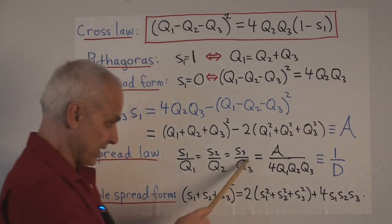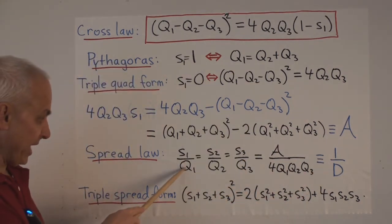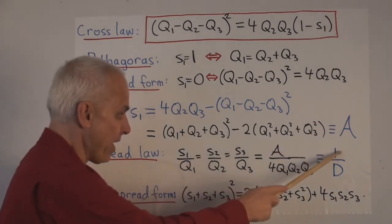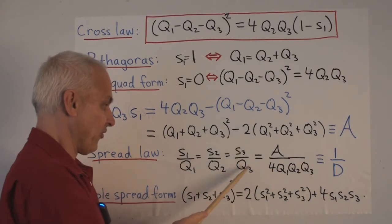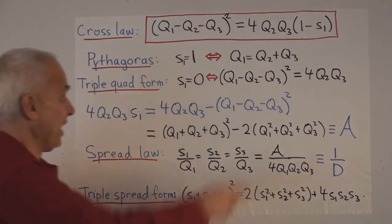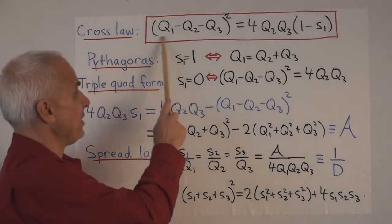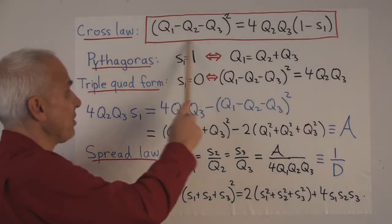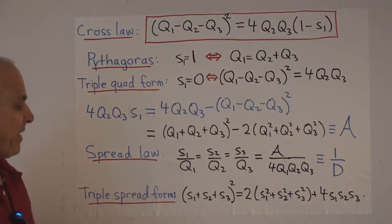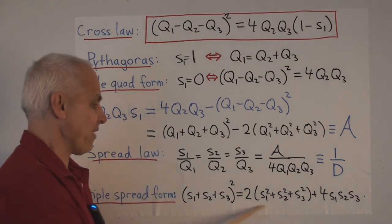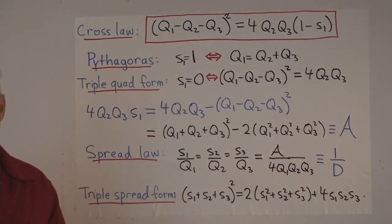And finally, if we let this common ratio be 1 over d, then we can replace Q1 with d times S1, and Q2 with d times S2, and Q3 with d times S3, in the cross law. When you do that, then the d's cancel on both sides. You get an expression purely involving the three S's. And then you expand that out, and you get the triple spread formula. This one right here, the relationship between the three spreads of a triangle.